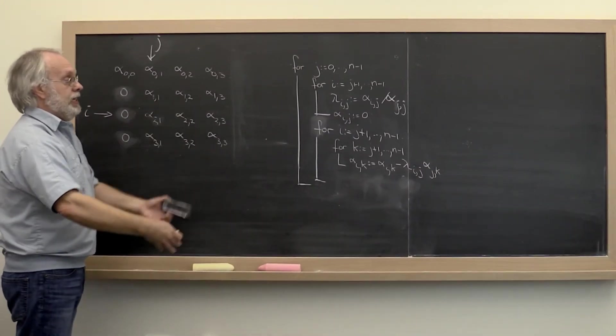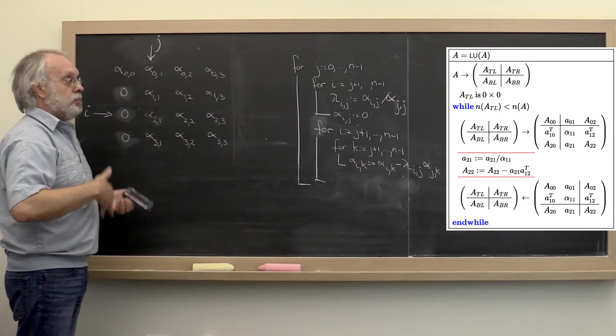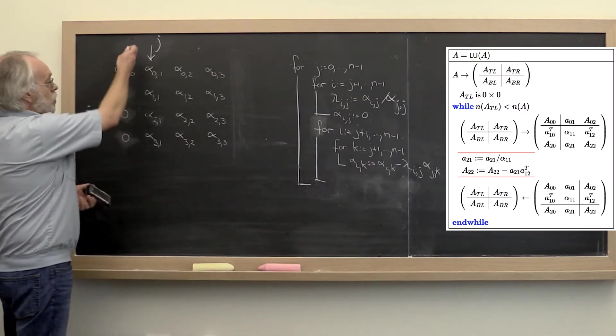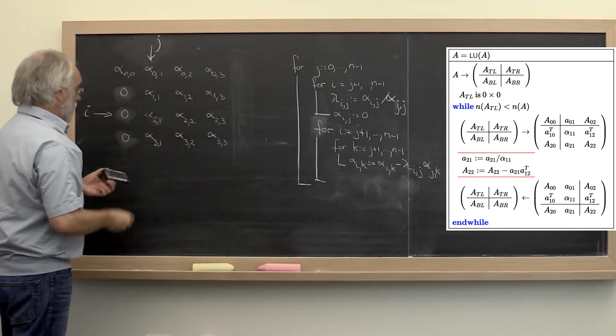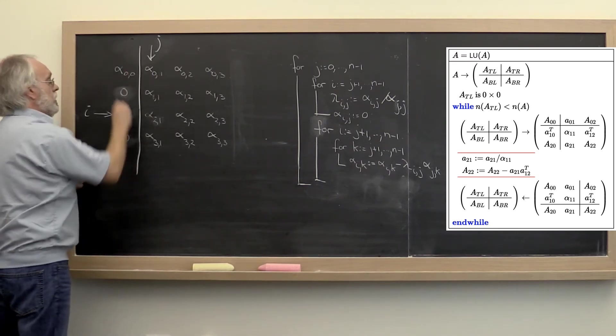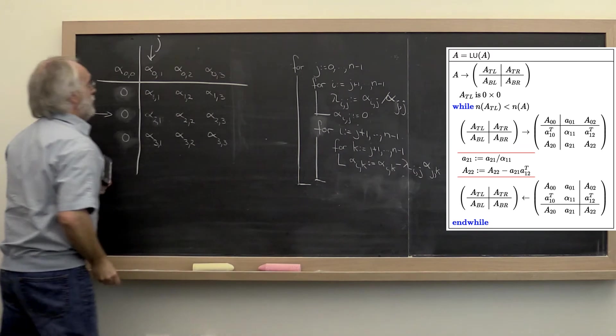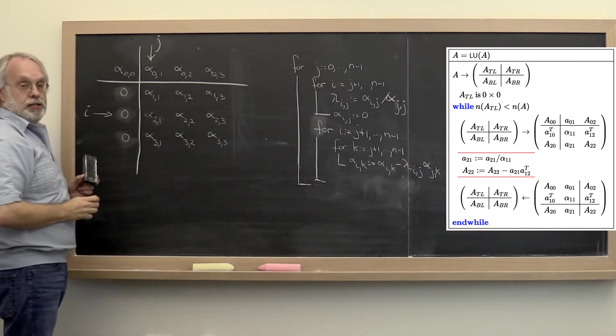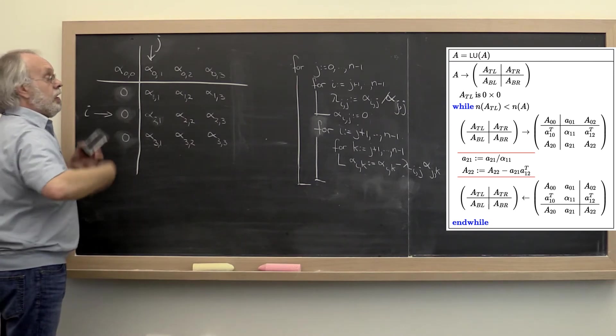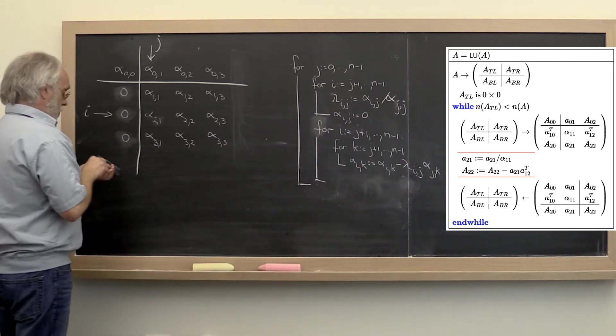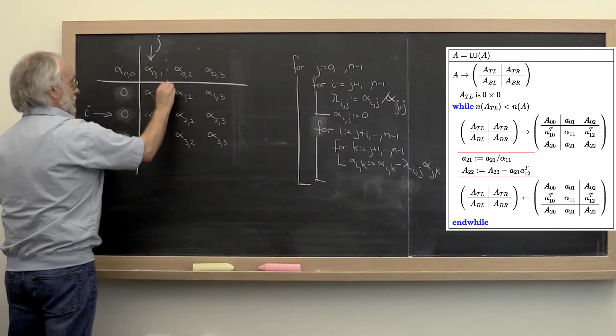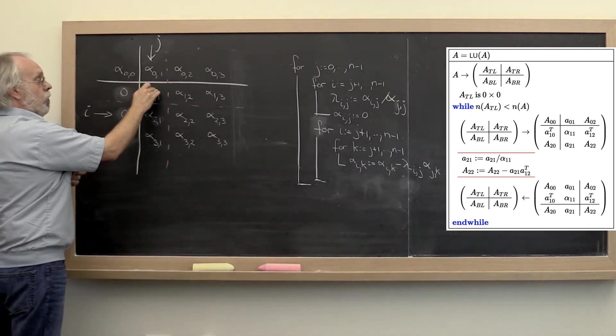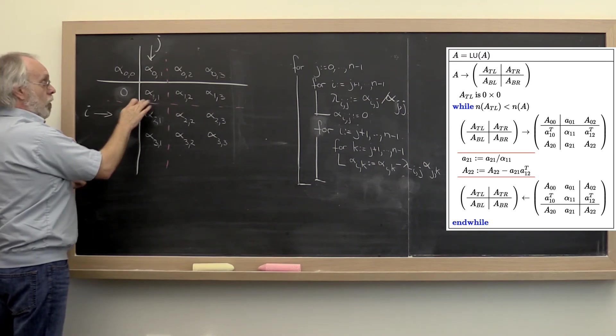Let's relate this to how we partition and repartition using the FLAME notation. When we say we're currently at this point, what we really are saying is that we have reached this point right here where this is a top left, a top right, a bottom left, a bottom right.